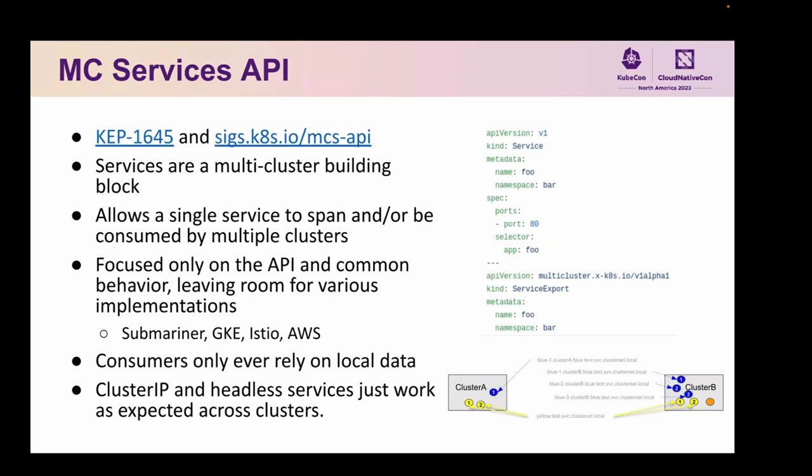When we did this, we focused only on the API because a lot of platforms have very different traits, and there are a few implementations out there now on different platforms with various constraints. The core of all of them is that you can create a ServiceExport resource and that service becomes consumable across all of the clusters in the ClusterSet. One constraint is that consumers should only ever rely on local data. We have a corresponding ServiceImport resource that gets created in a cluster as a service is actuated, making it easy to consume. ClusterIP services and headless services basically just work as expected across clusters.